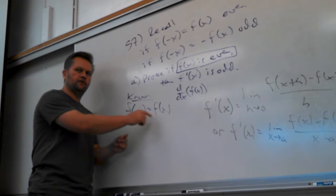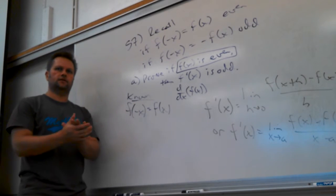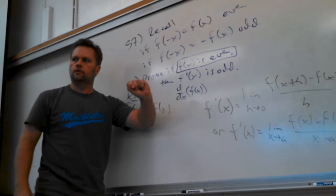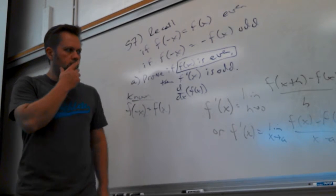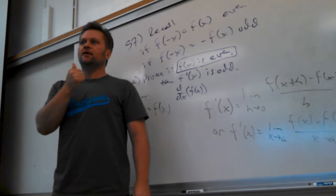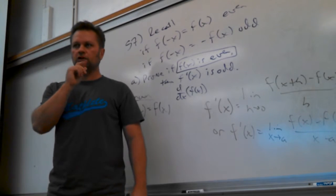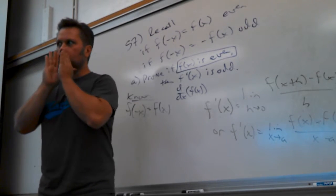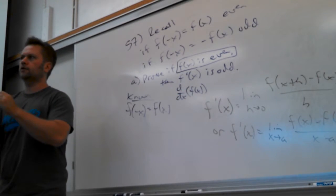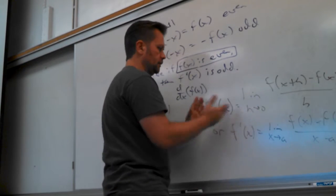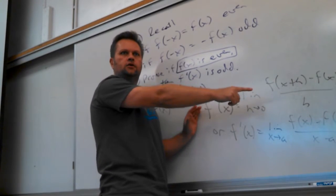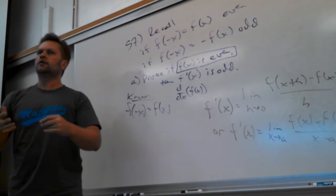We know that f of negative x equals f of x - we know that's true. We know what the function does. Now we want to know what the derivative of the function does. The definition of the derivative is right there in the limit form. So how do I test to see what kind of symmetry it has? Plug in negative x.